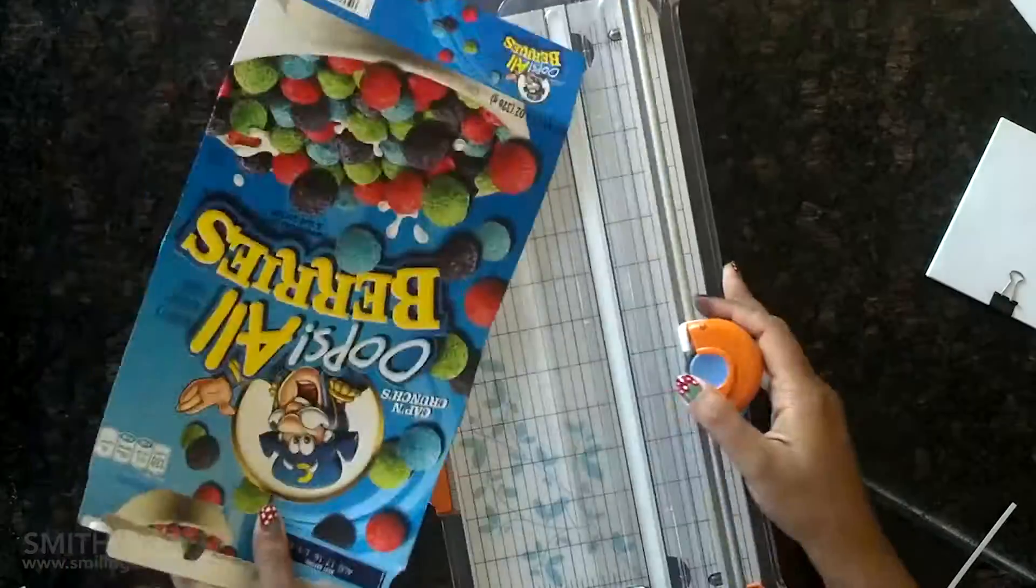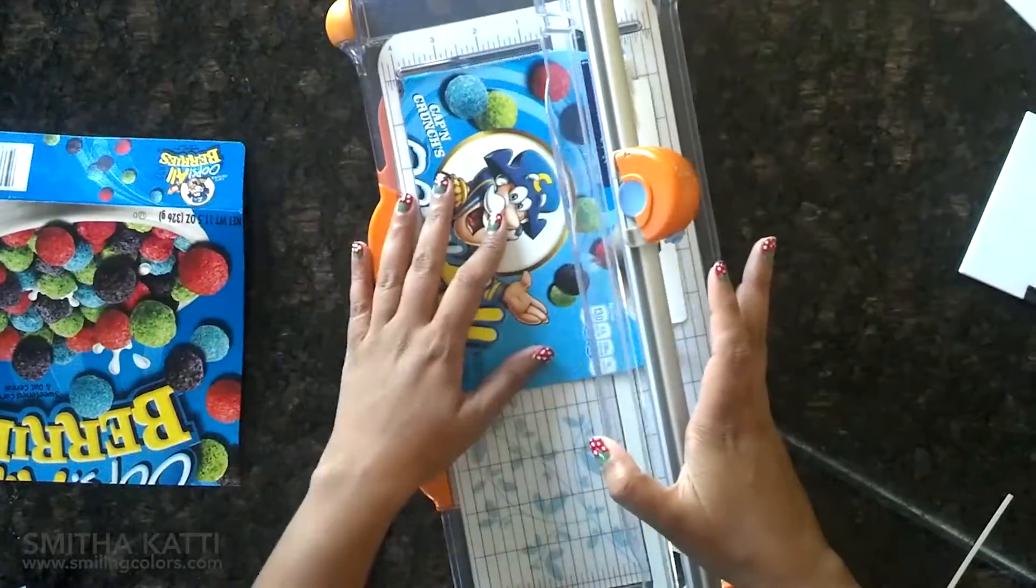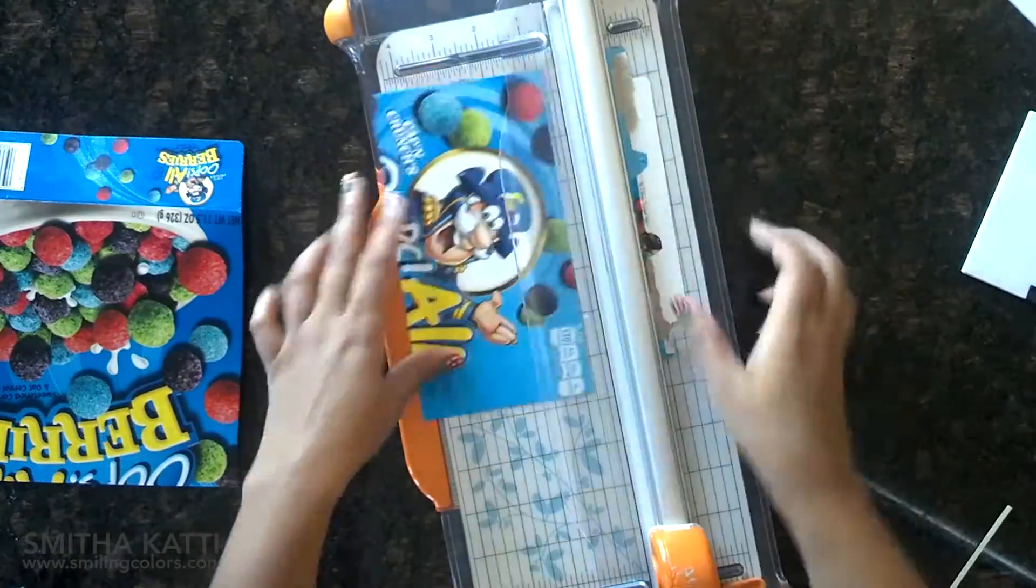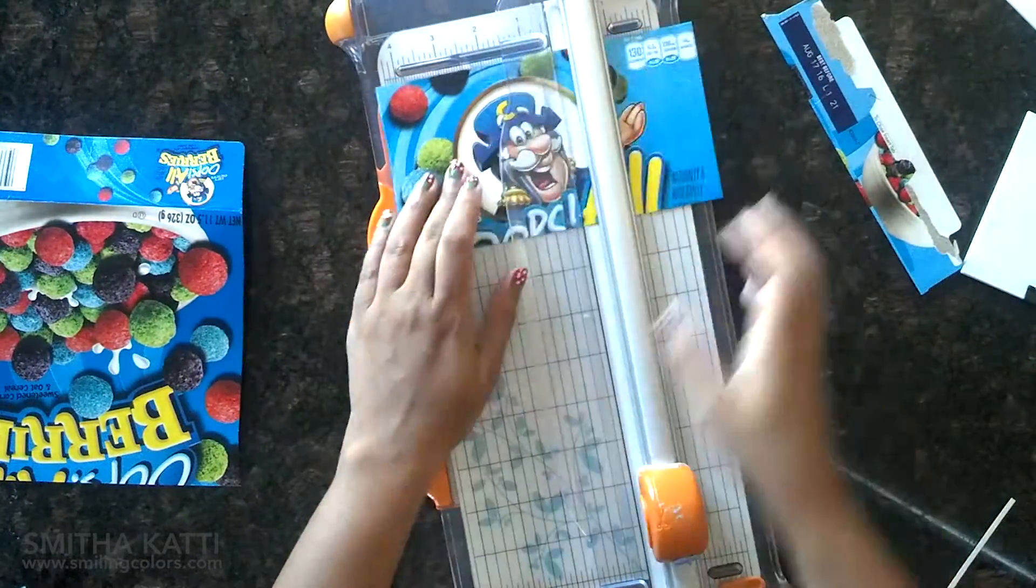Next using the paper trimmer, I am trimming my recycled cereal box down. I need to cut a rectangle the same size as the papers, that is 4x4.25 inches. This will act as the base of our notepad and give the notepad a little bit of stability.